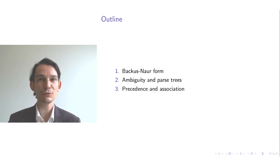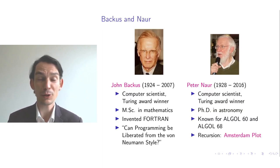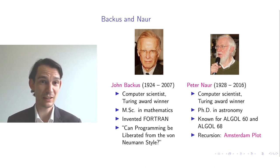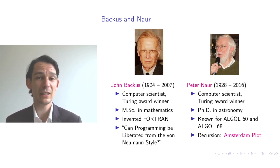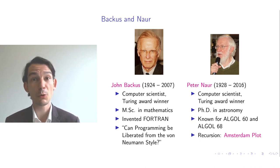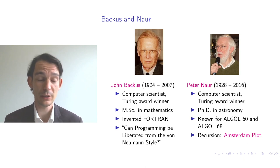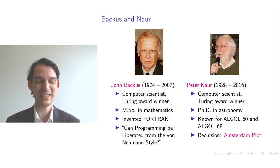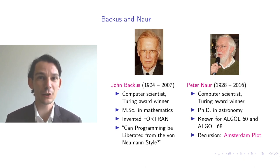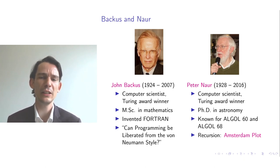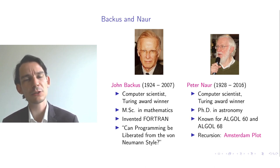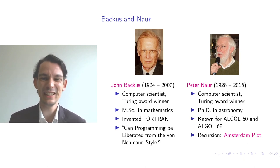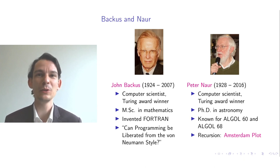Let me introduce you to John Backus and Peter Naur. Both are computer scientists — they have passed away already — and both won the Turing Award. It's a very well-known honor; some people say it's the Nobel Prize of Computer Science. John Backus did his master's in mathematics, while Peter Naur was originally an astronomer who got into computing later on.